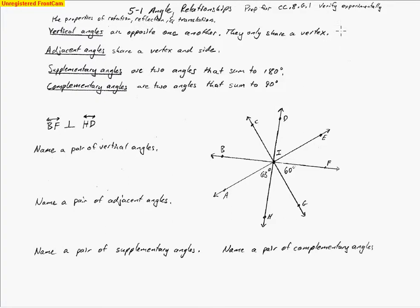Vertical angles are ones that are opposite one another, and they only share a vertex. If I was to draw a set of vertical angles, all I have to do is draw an X. You see these two angles here are vertical to one another, and they're exactly the same every time. This line goes all the way down, this one goes all the way down this direction, and they only share a point — where the two lines come together — and that's called our vertex.